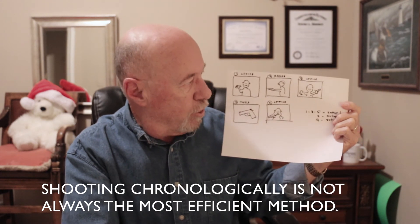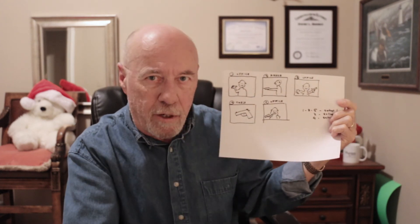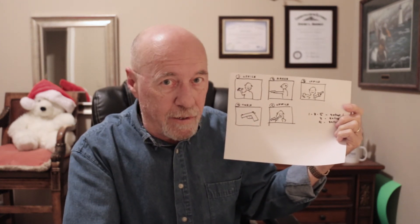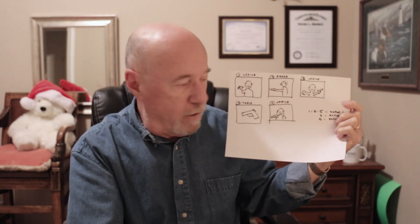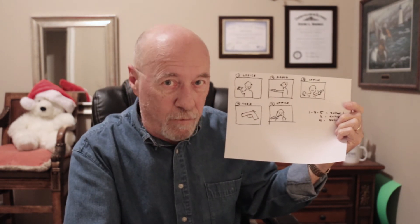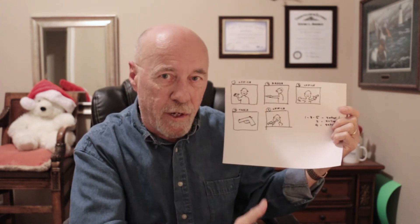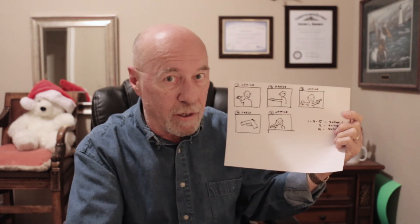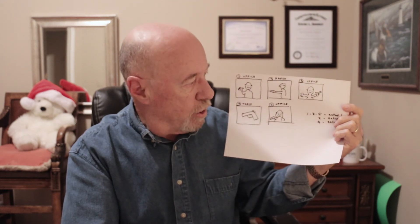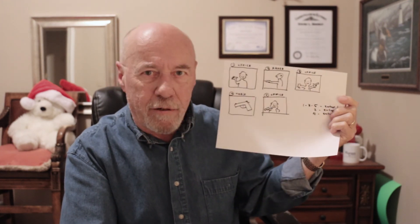A better way would be to shoot the range footage first or the tabletop review first, and get those out of the way. You could do the range video first, then come back to the office, set it up for your tabletop review, and then get your setup for the three office scenes so that there's no camera movement or resetting between them — and they all look exactly alike. It's much quicker and requires less work on your part. That's the way I would recommend.